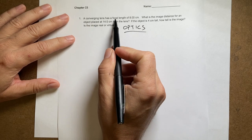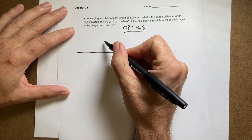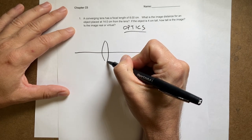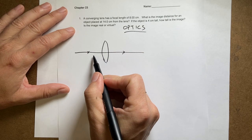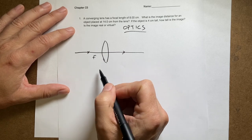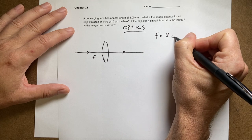focal length of 8 centimeters. What does a converging lens mean? If I put an axis right here, it's this kind of lens. I have a focal point there and a focal point there, and we'll call that F. That's the distance F, so F equals 8 centimeters. We don't have